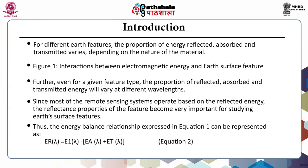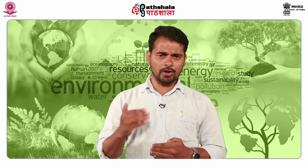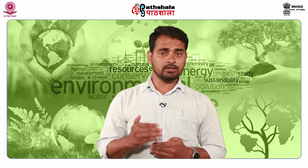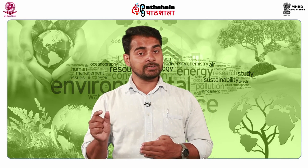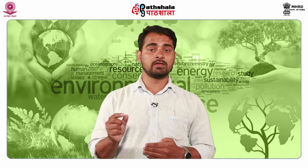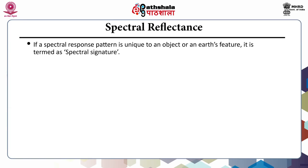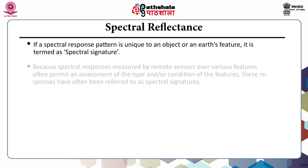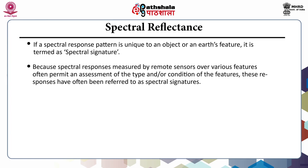The reflected energy at any given wavelength equals the energy incident on a given feature reduced by the energy that is either absorbed or transmitted. The quantitative measure of the reflectance characteristics of an earth surface feature is the portion of incident energy that is reflected, measured as a function of wavelength, and is called spectral reflectance. If a spectral response pattern is unique to an object or earth feature, it is termed a spectral signature, and remote sensors measuring such responses have often referred to these as spectral signatures.